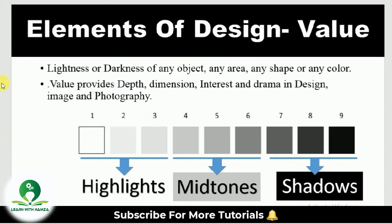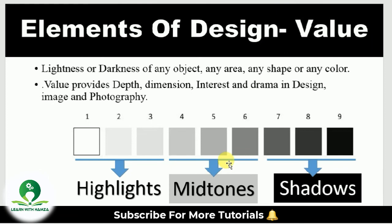The next element of design is value. Value is basically the lightness or darkness of any object, shape, area, or color. Value provides depth, dimension, interest, and drama in design, images, and photography. You are well aware of highlights, midtones, and shadows. In a value scale, one through three are highlights, four through six are midtones, and seven through nine are shadows. The light area is called highlights, darkness is called shadow, and the area between is called midtone.